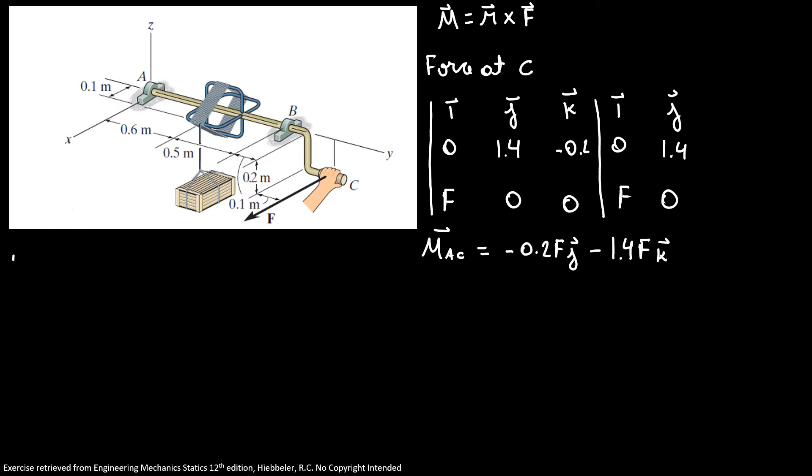Now I'm going to build the matrix for force B. We have i, j, and k. We have 0, 1.1, and 0. And our forces are BX, 0, and BZ. Solving our matrix, the moment at BA equals 1.1BZ in i direction minus 1.1BX in k direction.